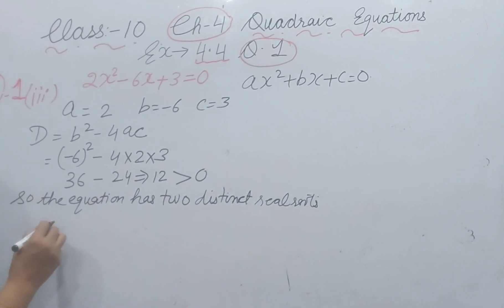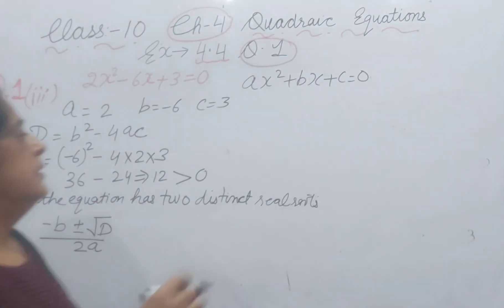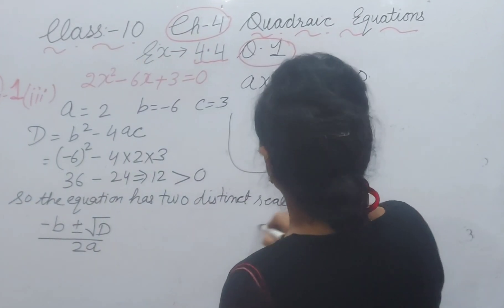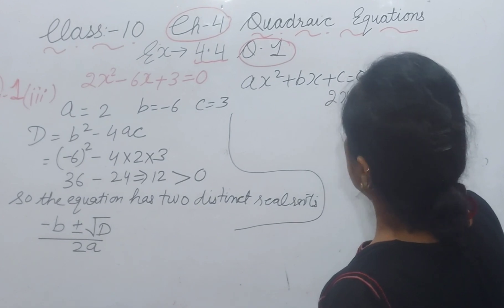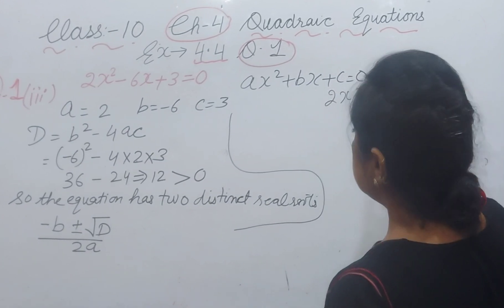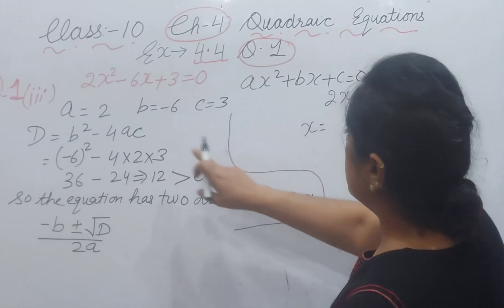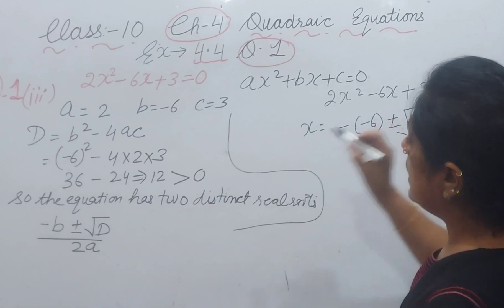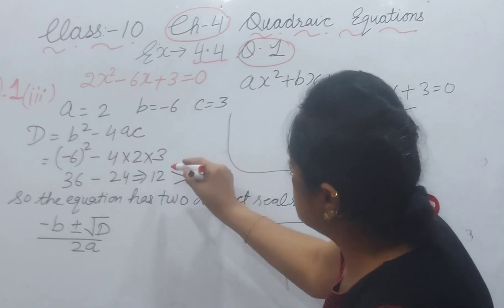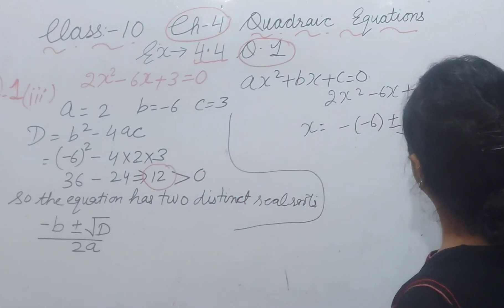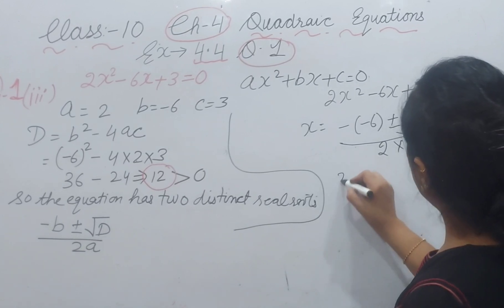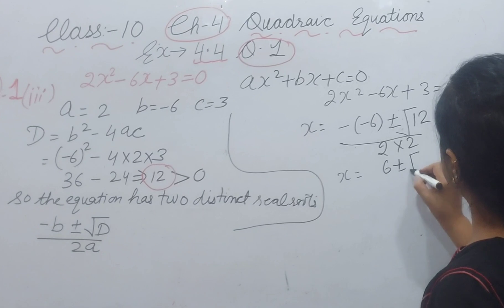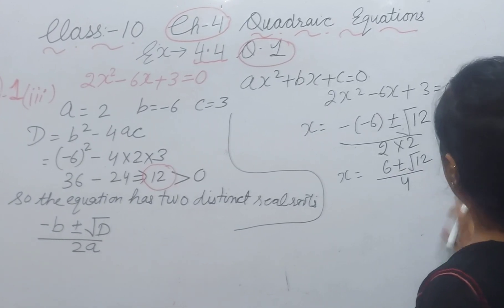We can find it by using the quadratic formula: x = (-b ± √D) / 2a. Now we will substitute values. Our equation is 2x² - 6x + 3 = 0. x equals -b (which is -(-6)) plus minus √D (which is √12) divided by 2a.